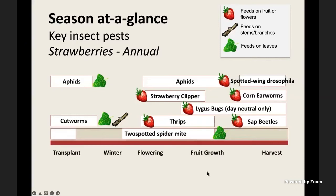During harvest, we have serious issues including sap beetles, corn earworms, and spotted wing drosophila. Spotted wing drosophila has become more important for strawberries recently than it has been in the past, as compared to some other berry crops where it has been a key pest ever since it was detected in the mainland US.